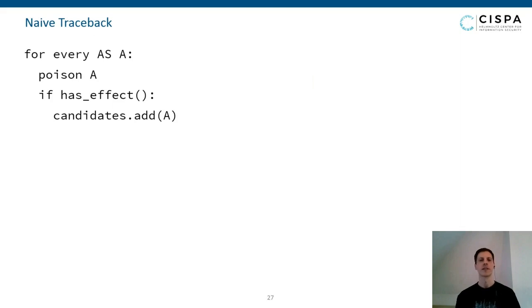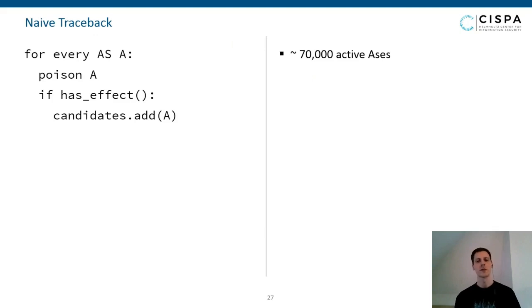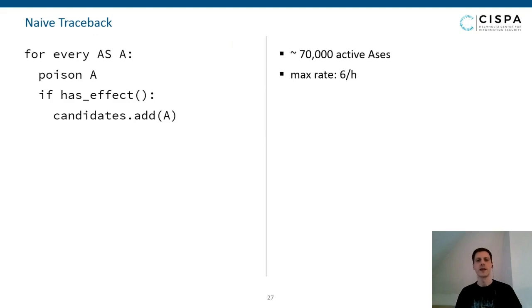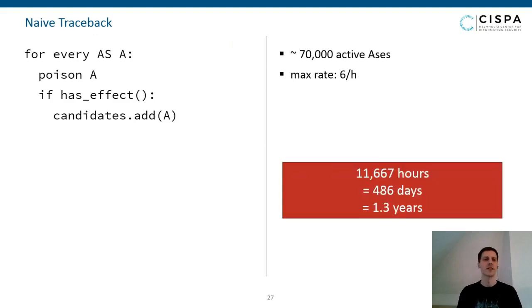The problem is there are roughly 70,000 active autonomous systems. Since BGP route convergence is slow, we need to wait for paths to settle before evaluating effects. We realistically cannot make advertisements faster than once every 10 minutes. This means probing the entire AS space would take around 11,667 hours — roughly 486 days, or about 1.3 years. Since attacks last less than an hour, this is clearly a problem.